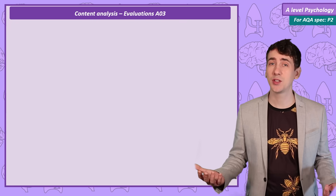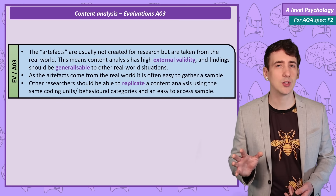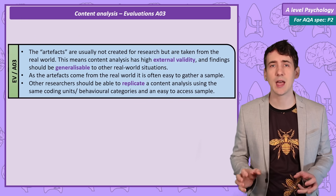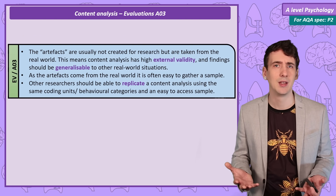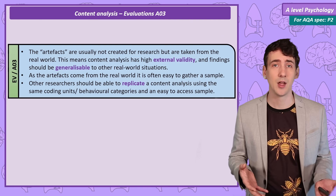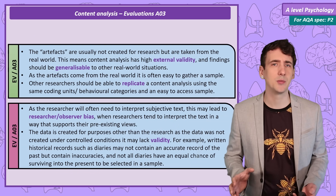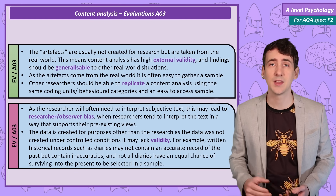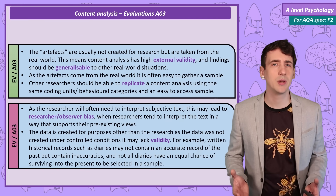Evaluations — what's good and what's bad about the use of content analysis in psychological research? On the positive side: as the material was not created for research but are real artefacts created by people, they have high external validity — this should be a true reflection of how people behave. As long as we've carefully selected our sample, we should be able to apply findings to other groups and situations. It's also generally easy to get a sample, as this data already exists in the real world and is often freely accessible. Replication is also possible by other researchers who can analyse the data with the same behavioural categories. However, as with any research requiring interpretation of meanings, there's a possibility of observer bias, with the researcher applying categories in a way that matches their research question. We can also suggest content analysis lacks validity — the data is created for other purposes, and is a record of opinions not behaviour. Diaries, letters, and tweets might not be truthful records.